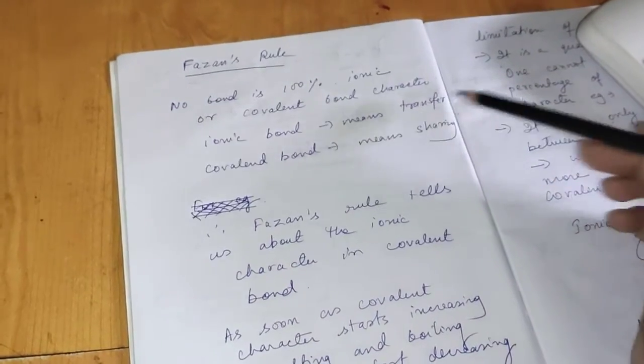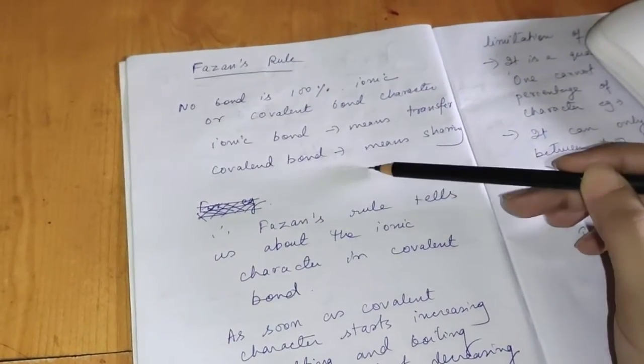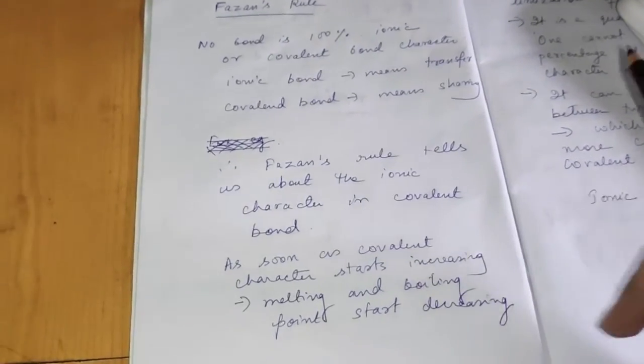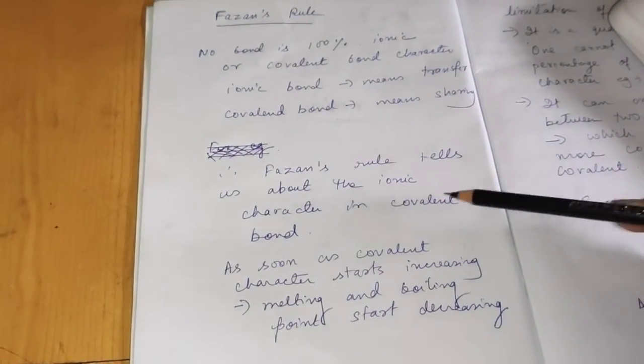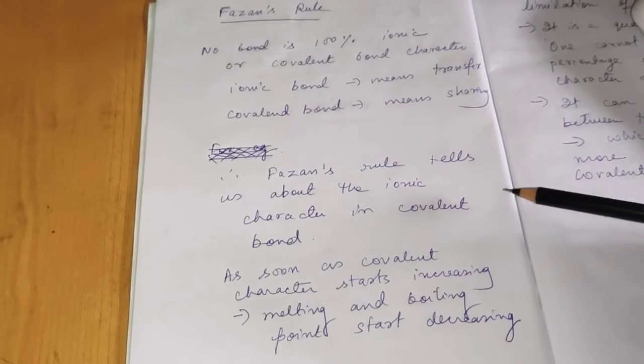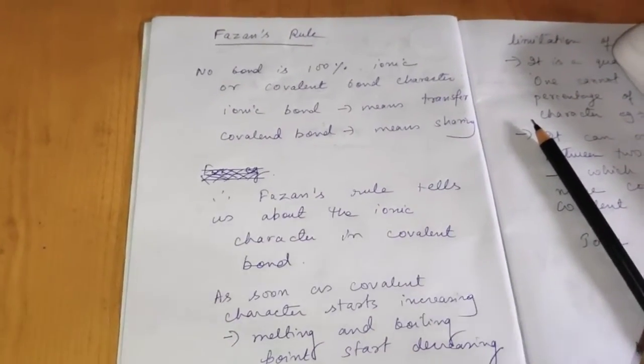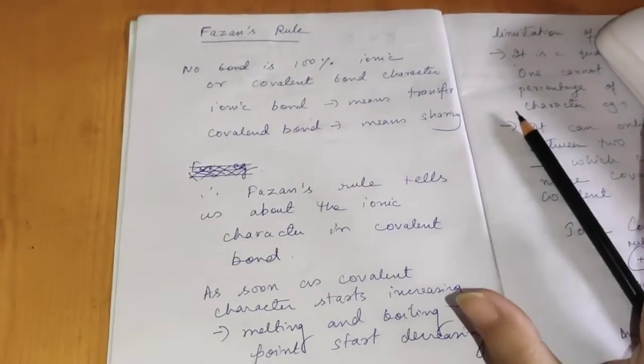Ionic bond means electron transfer and covalent bond means sharing. So Fajan's rule tells us about the ionic character which is present in covalent bond. As I said earlier that no bond can be 100% covalent or 100% ionic.